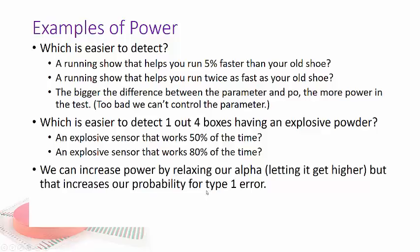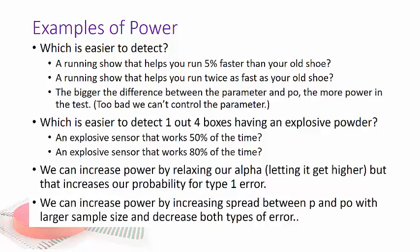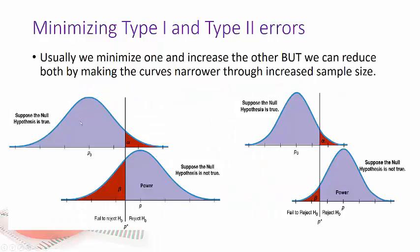We can increase power also by relaxing our alpha. That means letting it get higher but then that increases our type 1 error. Not the ideal situation. We can also increase our power by increasing spread between p and p0. Not the actual absolute spread but with a larger sample size those curves are going to tighten up and so you're going to have less overlap. Really the better way to say it is by decreasing the overlap between p and p0 as you can see in this next picture. So here we have one sample size and look how much overlap we have here. As we go to a smaller sample size the amount of overlap between the two curves decreases meaning we have both more power and without hurting our alpha our type 1 error.